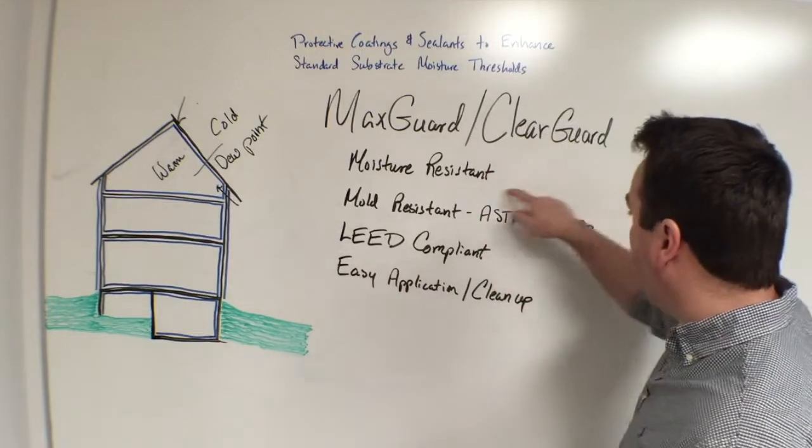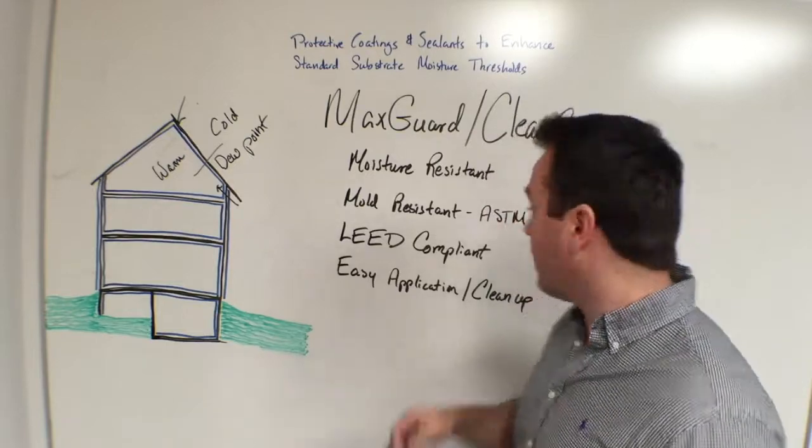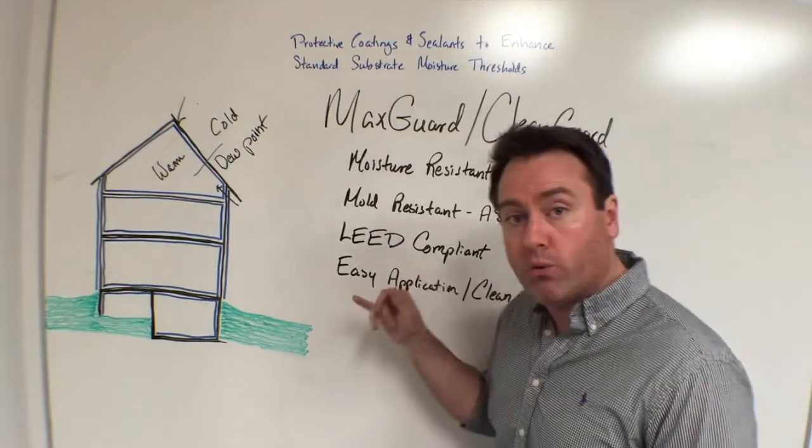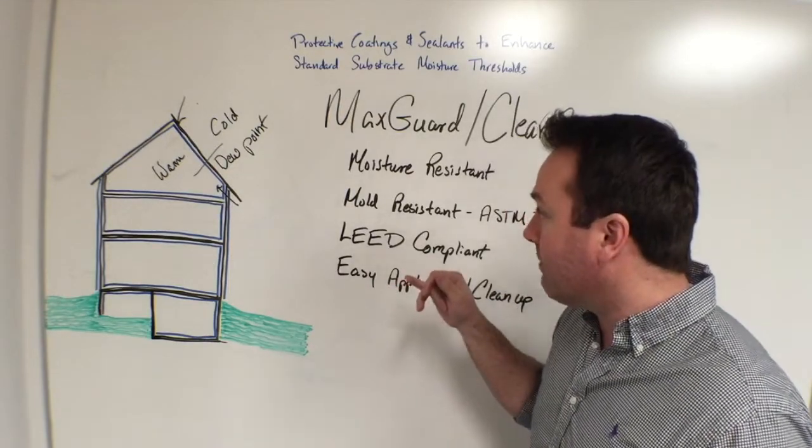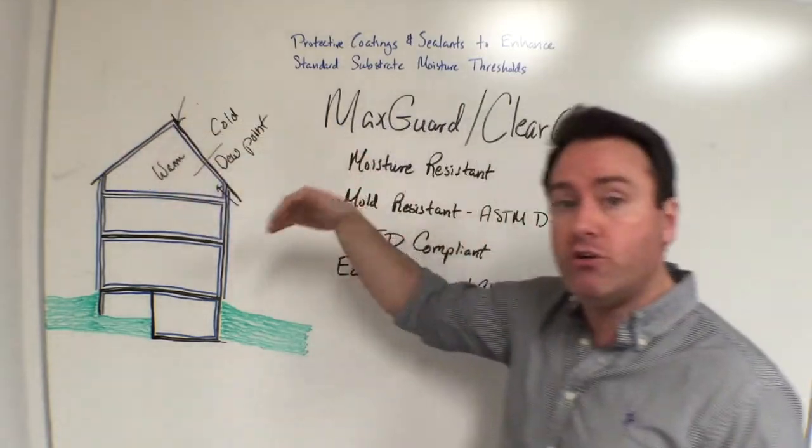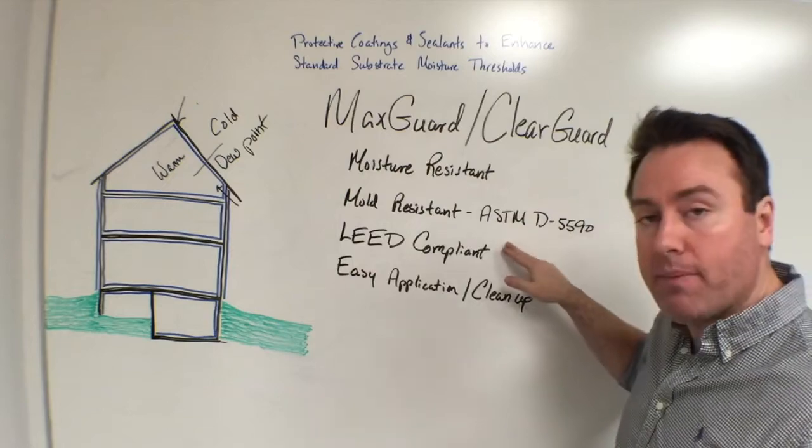That test method by the way that's used to measure the efficacy of those products is ASTM D5590. This is at least one of the standards in mold resistance in the industry, and so we're taking a moisture resistant product, adding to that a mold resistant product in and of itself, and then we've got to talk about another issue and that is not exchanging one problem for another.